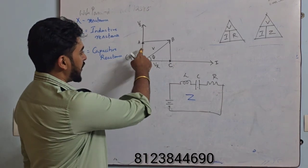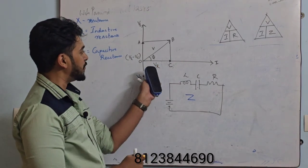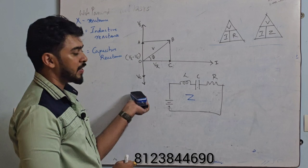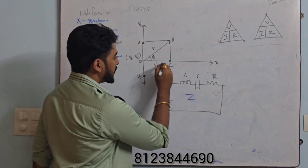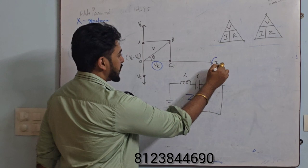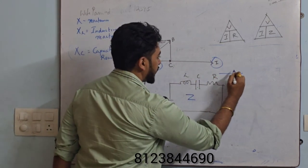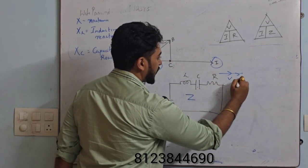So we can see in this phasor diagram about resistor, inductor, and capacitor voltages. In resistors, the voltage and current are in phase. In the sense, this is my voltage and this is my current, both are in phase.